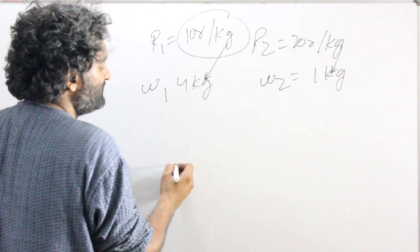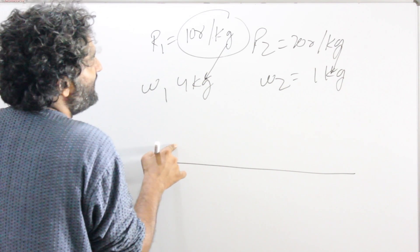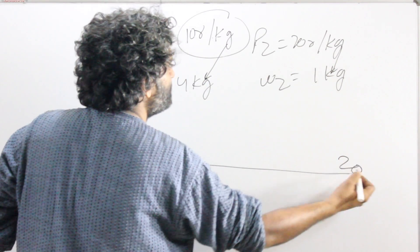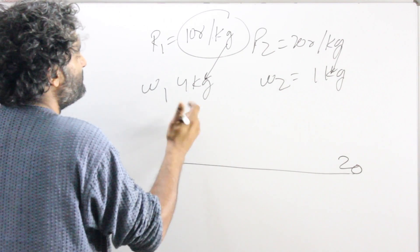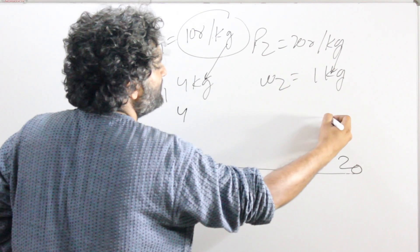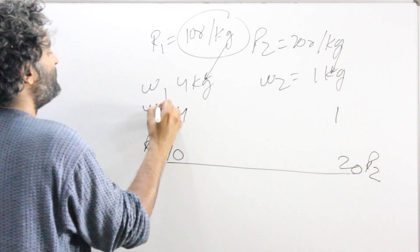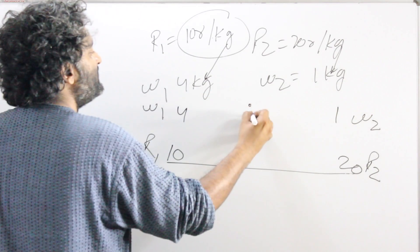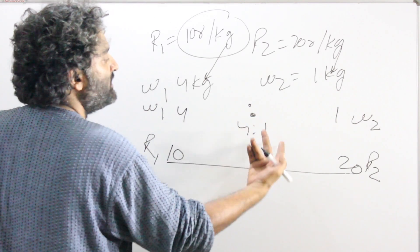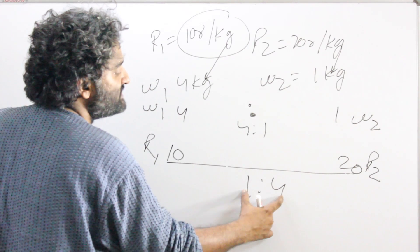We can obviously do this by formula, but the scale method — also called allegation — will work like this. Put rate 1 here, which is 10. Put rate 2 there, which is 20. Put weight 1 above rate 1, which is 4, and weight 2 above rate 2, which is 1. Put the ratio sign here. The ratio itself in simplified form is 4 is to 1. Reverse this ratio and write it below the scale: 1 is to 4.